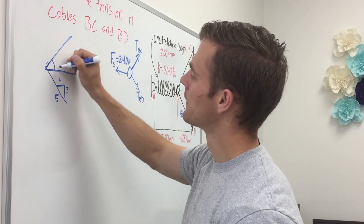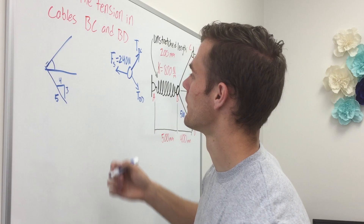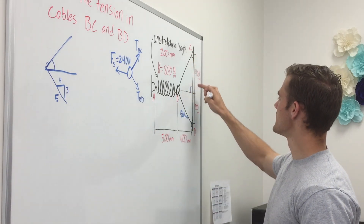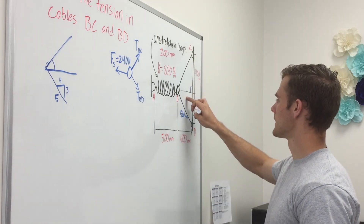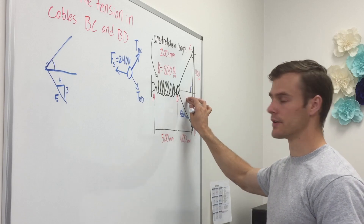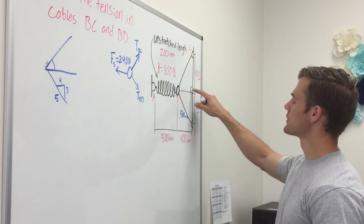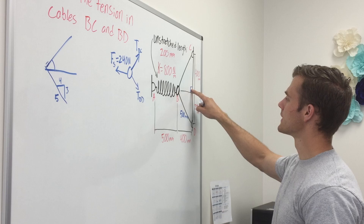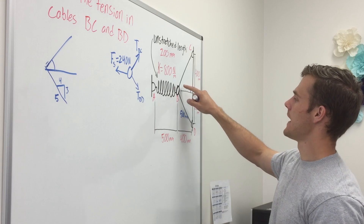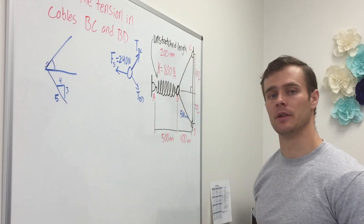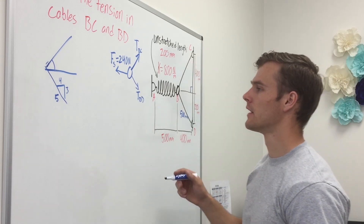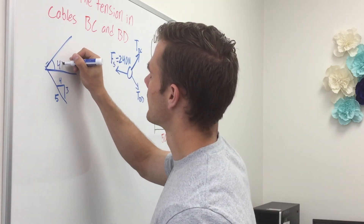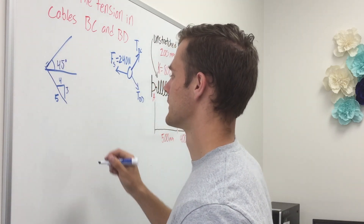We're going to solve for the angle of the BD cable. Each of those two sides is 400 millimeters long, and because this is a right triangle there will be 90 degrees in this corner, making each of the other angles 45 degrees. So we know that this angle is 45 degrees.